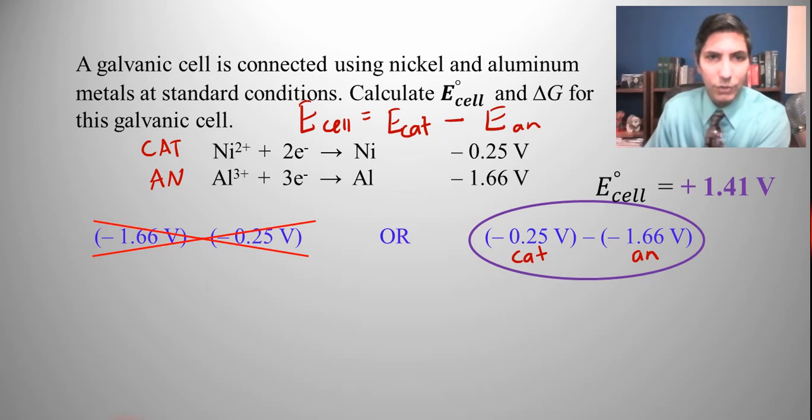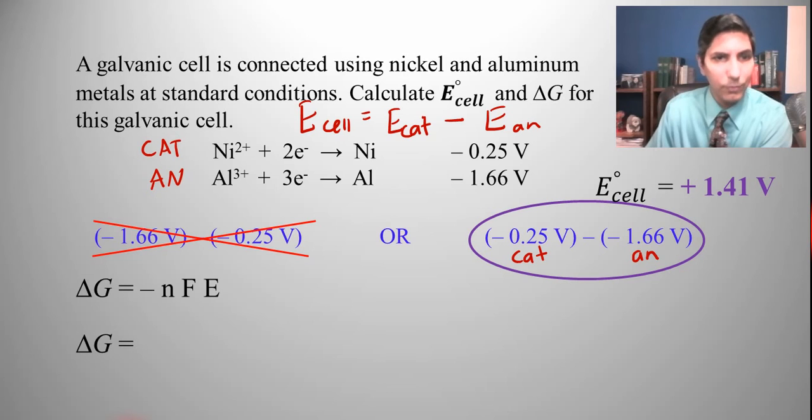So delta G is negative nFE. So once again, we're trying to solve for delta G. So that's our unknown. Now, we have a negative sign, but then we have n. How many electrons are going to be transferred?